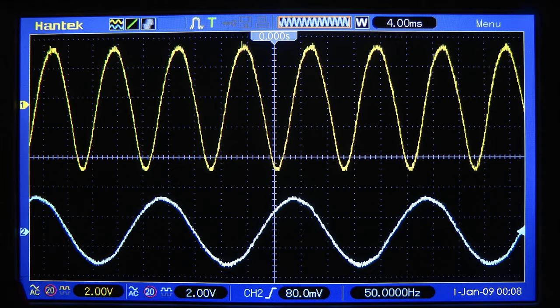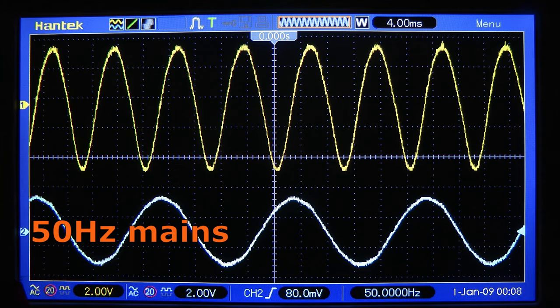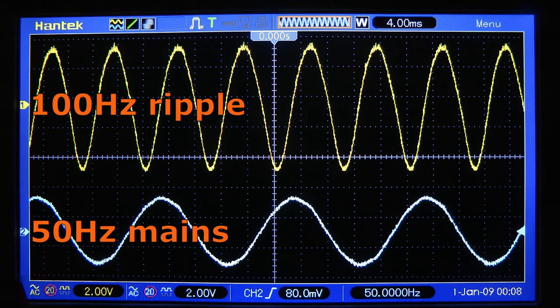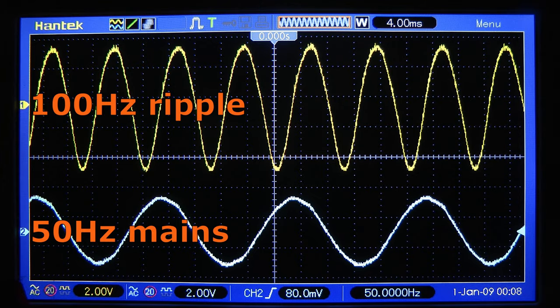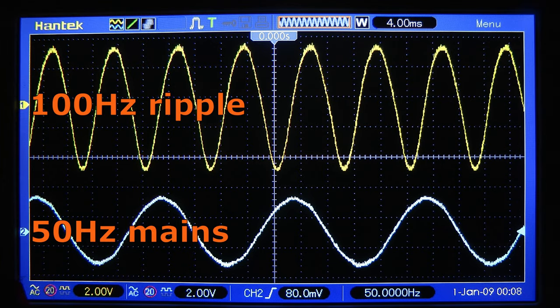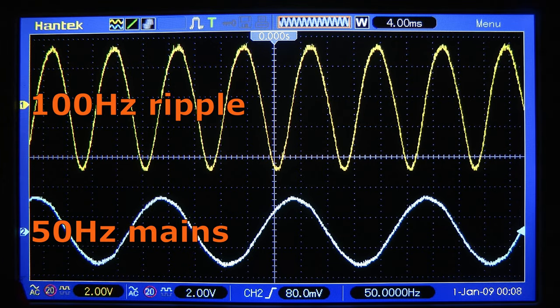For these tests I'm actually triggering the scope from the 50 Hertz mains, and the 100 Hertz ripple is locked to it, which suggests the driver doesn't have a free running oscillator inside. I reckon this is just a case of some of the rectified mains making it to the output.